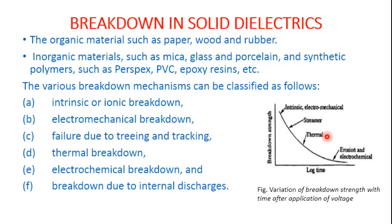Whatever energy is gained by the insulator, there must be thermal equilibrium; otherwise there is a rise in temperature of the insulator. Then the last phase is erosion and electrochemical breakdown, resulting in complete decomposition of the synthetic material across the insulator and leading to conduction and breakdown. So the breakdown strength initially is high and goes on reducing until breakdown takes place.